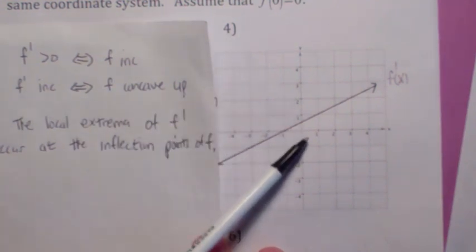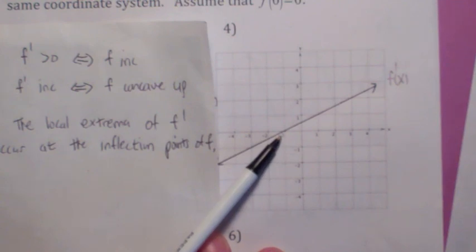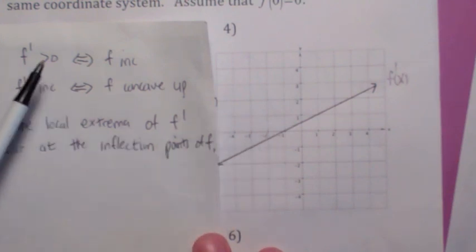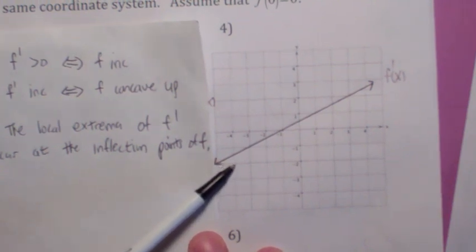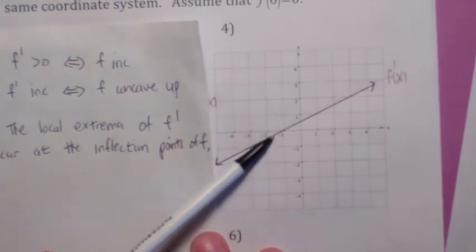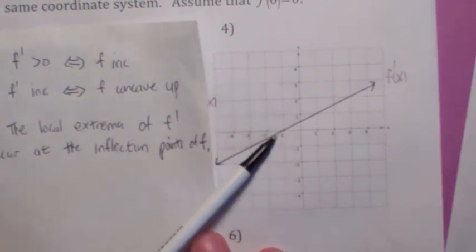f prime on this next one, number 4, is greater than 0 as long as x is greater than negative 1. So that means f has to be increasing when x is greater than negative 1. Whenever f prime is less than 0, f has to be decreasing. So if the derivative is negative here, that means f has to be decreasing. In other words, you have a local min here. You have a local min at negative 1.